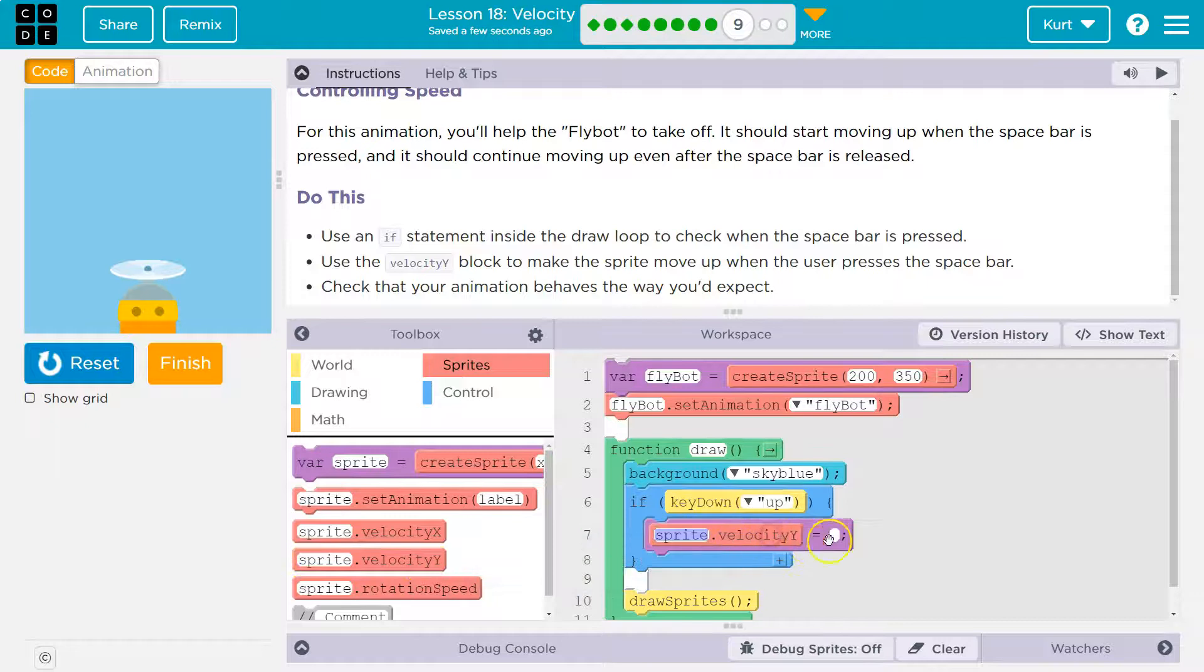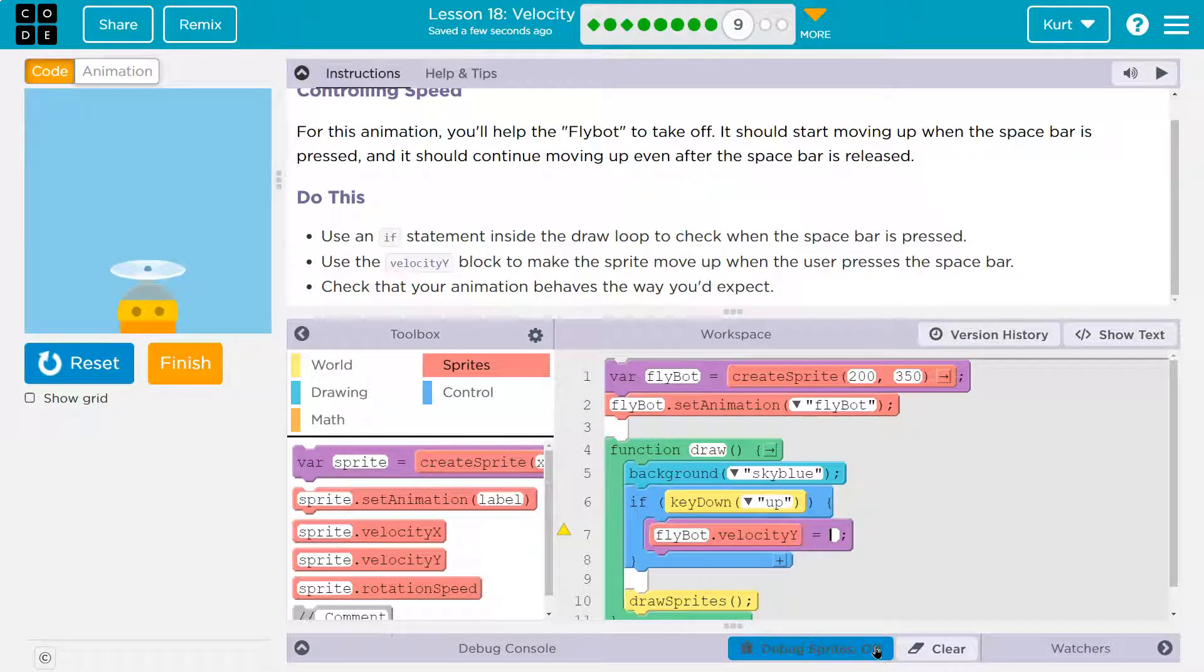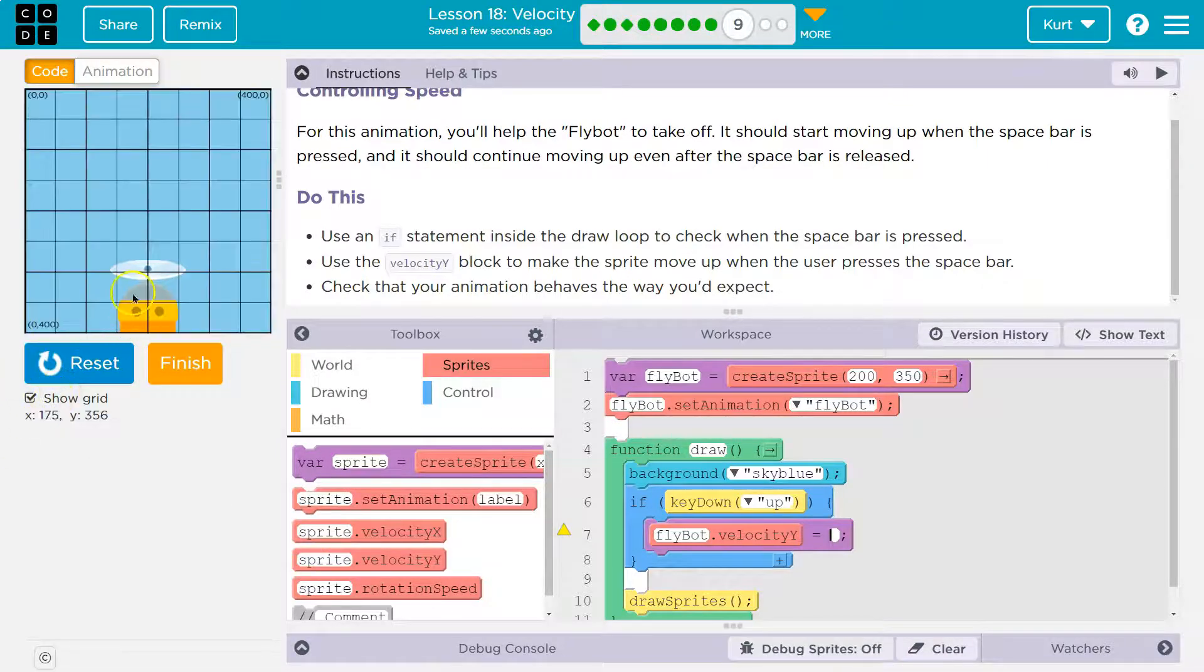Let's take a look for velocity. Yep, now we need to put in the speed for this. So first off, we don't have a sprite. We have a FlyBot. So make sure we replace that because our variable is FlyBot. Now, for speed, this is weird. Let me show you the grid.